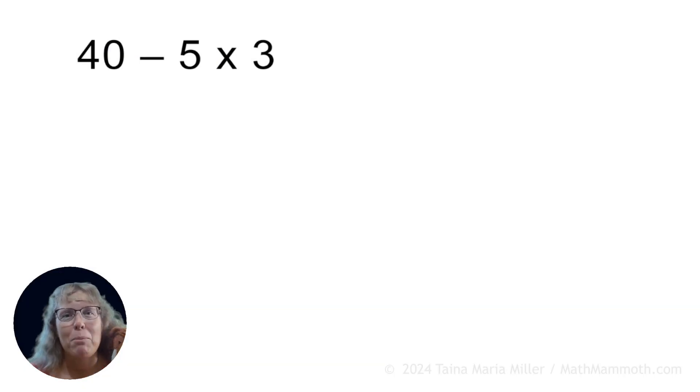Now what about this one, you tell me, what do we do first, subtraction or multiplication? Yes, this first, 5 times 3 is 50. And then we do 40 minus 15 equals 25.